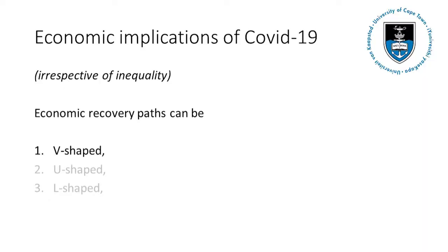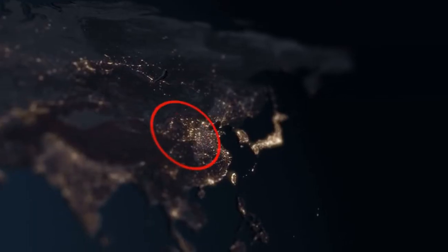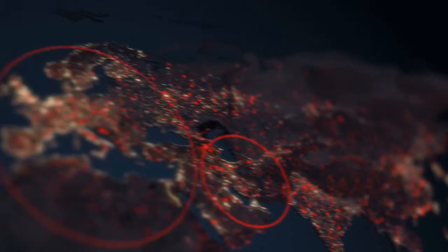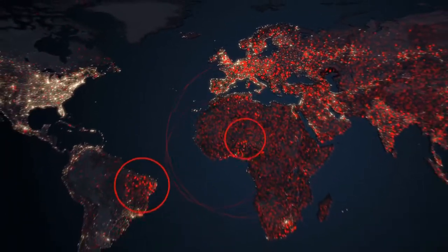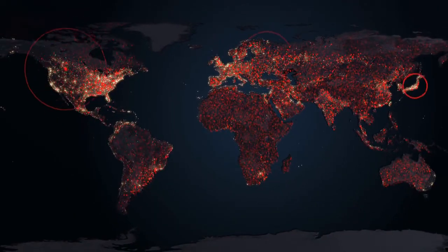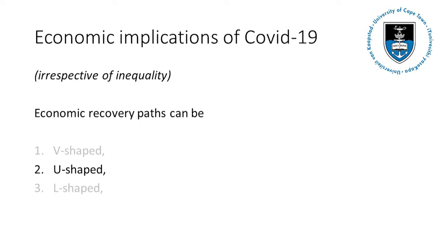Economists generally talk about three types of recovery. The first and best is a V-shaped recovery, meaning that after a rapid decline, an equally rapid rebound happens — a pattern often observed with other pandemics. That being said, this pandemic is far more severe than others, and the world was drowning in private and public debt when it started, so the current economic impact could very well be worse. A scenario that is worse is known as the U-shaped recovery, where economic growth drops rapidly and then stays low for quite some time before recovering.